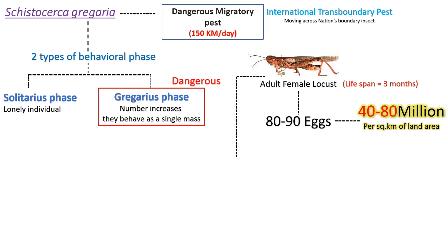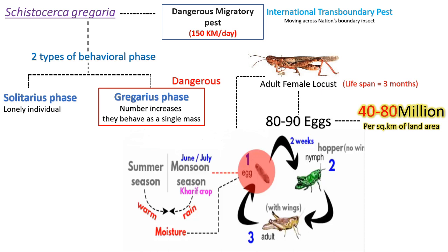If you take the life cycle of the locust, it is very much similar to a regular grasshopper. It consists of three stages. The first one is egg. After two weeks, it turns into nymphs, which are known as hoppers — they don't have wings. Finally, it turns into an adult with wings.